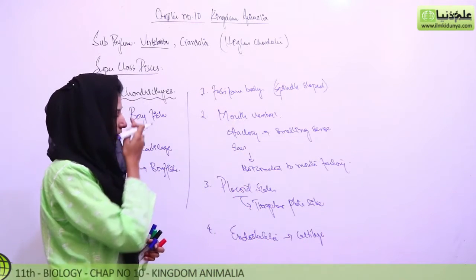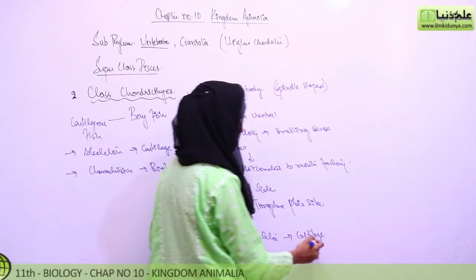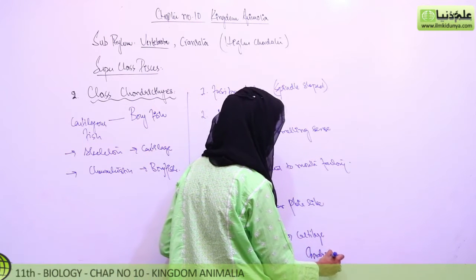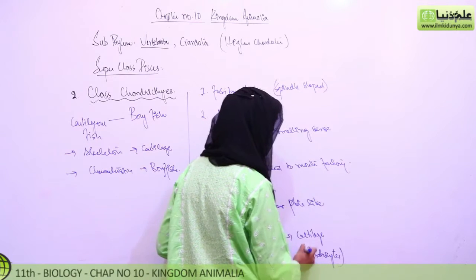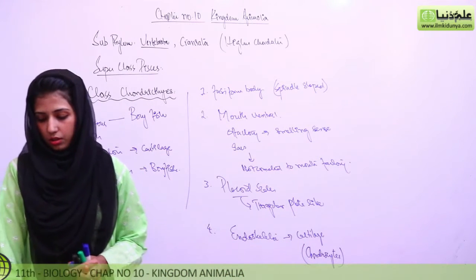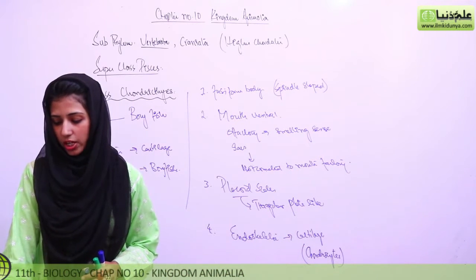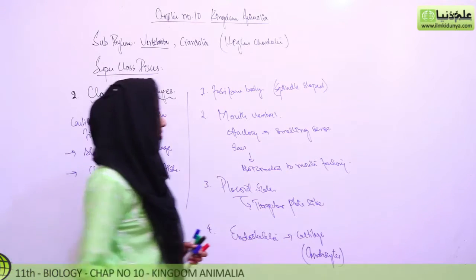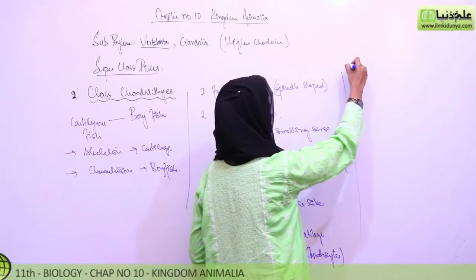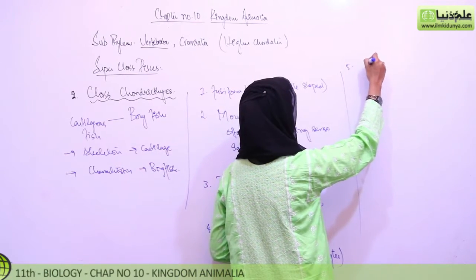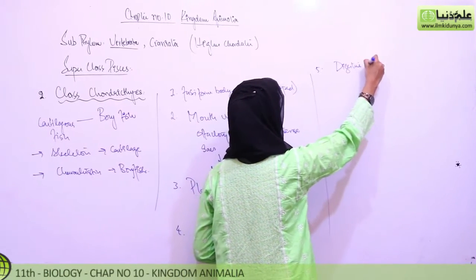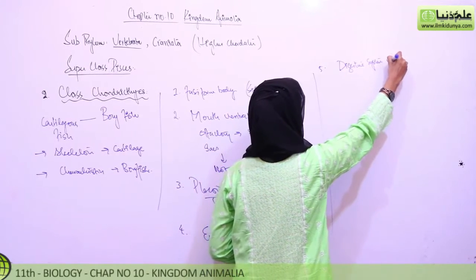The cartilage cells are called chondrocytes. These chondrocytes are the cells that make up the cartilaginous endoskeleton characteristic of this class.